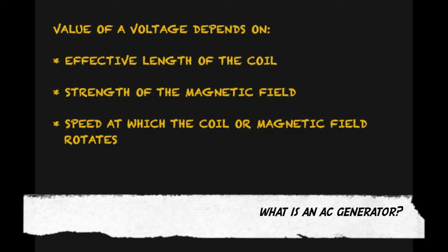The value of a voltage depends on the effective length of the coil, the strength of the magnetic field, and the speed at which the coil or magnetic field rotates.